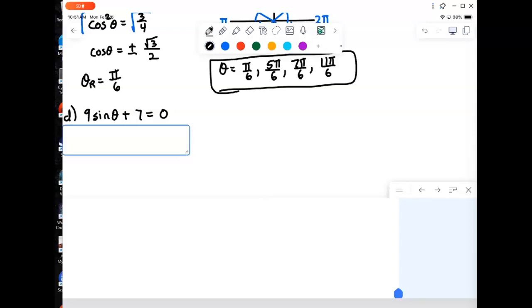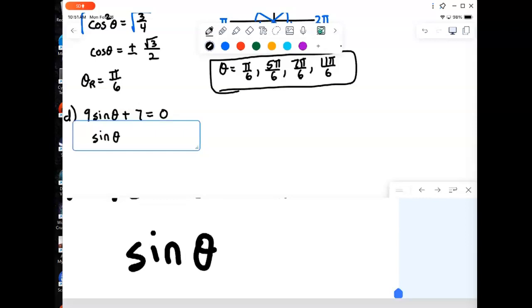So considering this example here, we have 9 sine theta plus 7 equals 0. So we solve for sine of theta. We'll have to bring the 7 over and divide by 9. So I'm actually going to do both those steps in one step. We bring over the 7, divide by the 9, and that will give us the equation sine of theta equals negative 7 ninths.